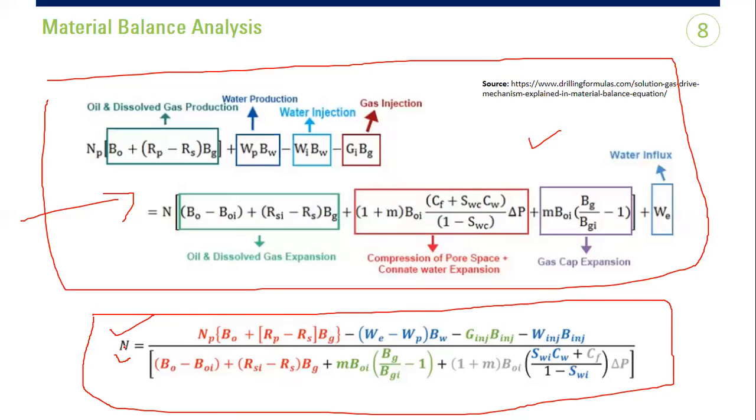You can get this one if you have comprehensive data of your production. So if you have cumulative oil production and cumulative water production, but you need to do quite a challenging analysis to get the water influx.